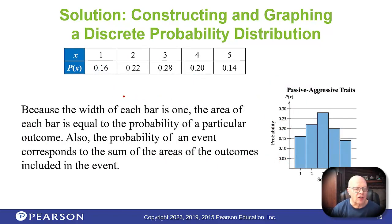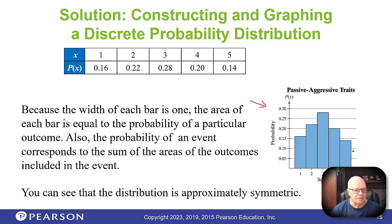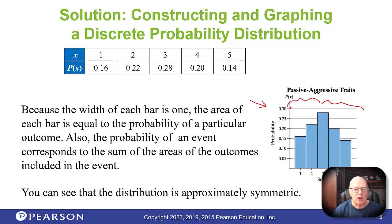Here's our histogram — it's a good idea to make a histogram with almost everything you do from here on. Notice the picture it draws: it's approximately symmetric, meaning the right half and the left half are mirror images of each other or very close to it.